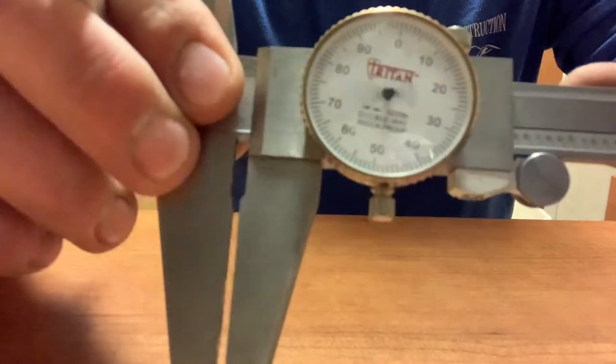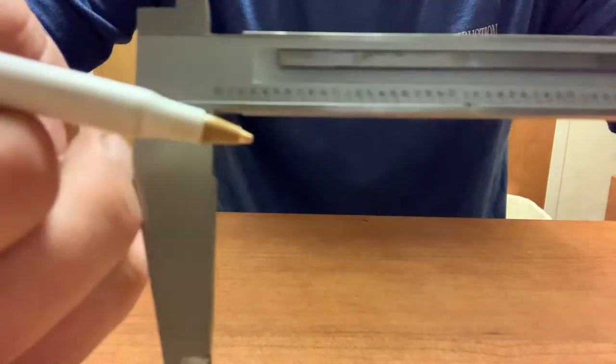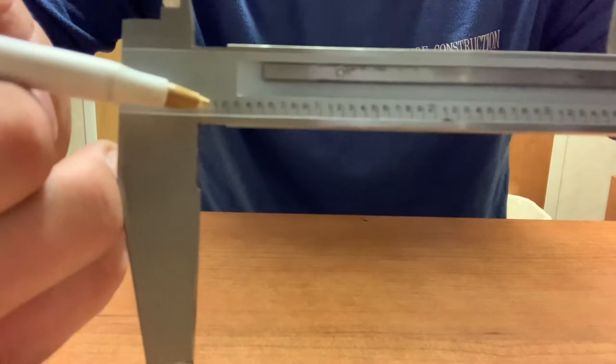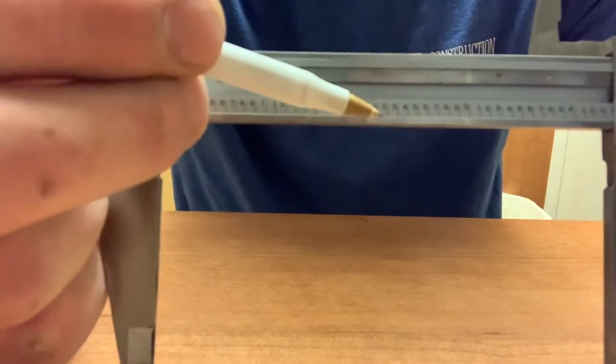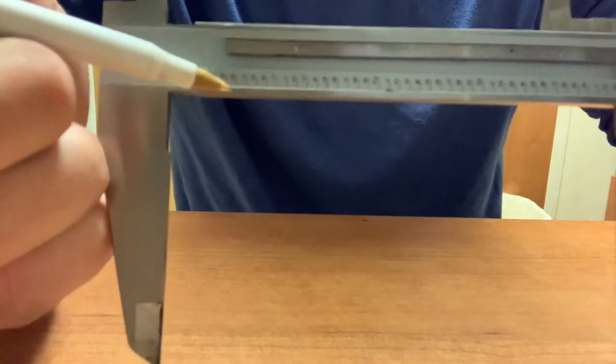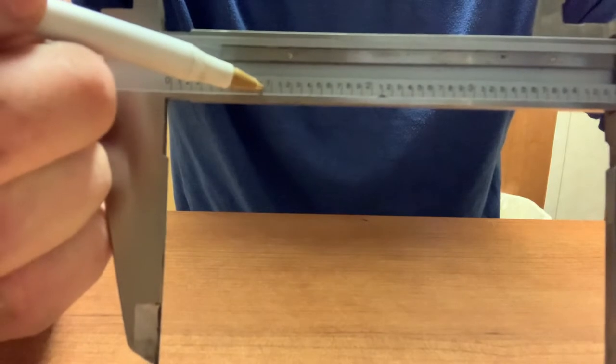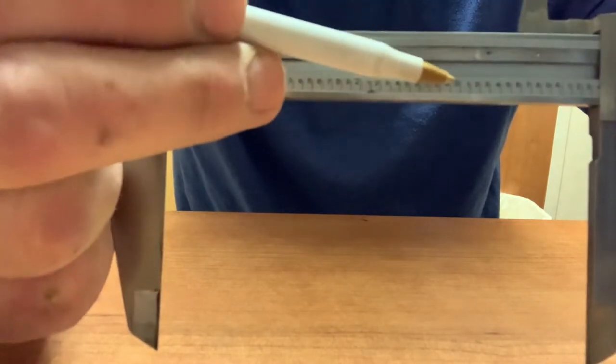First looking at our hash marks here, you can see there's a series of small numbers and then big numbers. Big numbers represent inches. So big one, one inch, two inch, three inch.